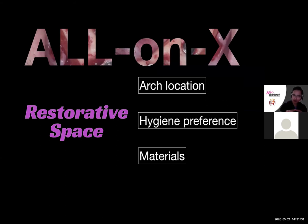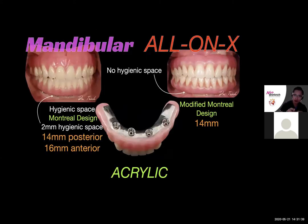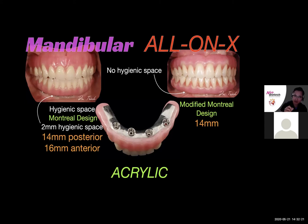For All-on-X, the minimum restorative space needed depends on the arch location, hygienic preference, and prosthetic materials. In the mandible, the hygienic design is frequently used — also known as the Montreal bar design. It consists of denture acrylic wrapped around a custom titanium bar, but the underside of the bar is left exposed with two millimeters of space from the gingival tissue to the underside of the bar. This allows the patient to clean underneath the exposed polished titanium, reducing plaque retention. The gingival tissue response is more positive to polished titanium than to porous dental acrylic. The total restorative space needed for this design is 14 millimeters in the posterior and 16 millimeters in the anterior.